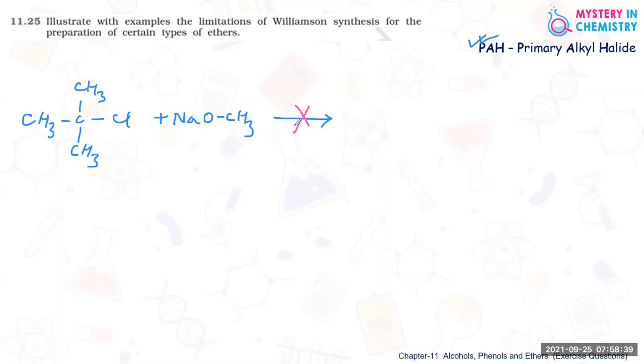So this we have to consider as a limitation of Williamson synthesis. In place of substitution, actually what happens in this case is elimination reaction is taking place. Because of this strong base, sodium methoxide is a strong base, and in presence of a strong base in case of tertiary halide, elimination reaction is taking place and we can't get ether. Now how the elimination is taking place.